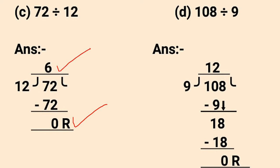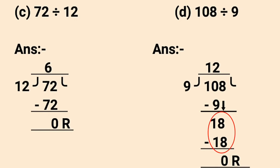We have quotient 6. D part is 108 divided by 9. Now 9 ones are 9. We write 9 under the 10. So 10 minus 9 gives us 1. Now 8 comes down with 1, so it becomes 18. Now 9 twos are 18. Now 18 minus 18 gives us 0 remainder. So we have quotient 12. This is the answer.